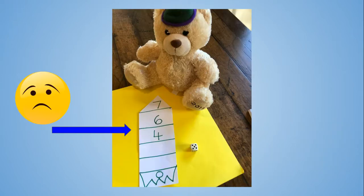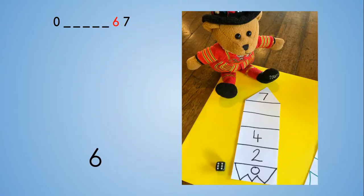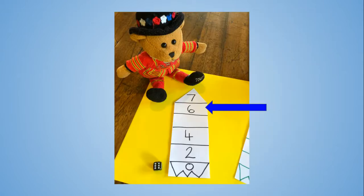Wimbledon Bear's thrown a 5, but oh no! He hasn't left a space for number 5. He's going to miss a turn as well. Ted Bear's thrown a 6. He's remembered that 6 comes just before 7. Yes! He's got a space for his 6.